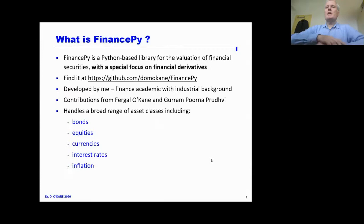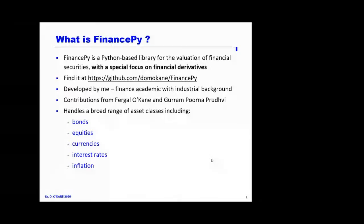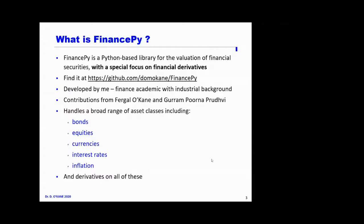The library is very broad in scope — it handles a broad range of asset classes: derivatives on bonds, equities, currencies, interest rates, and inflation. The next thing I'm working on is commodities. It also handles both those assets and their derivatives.